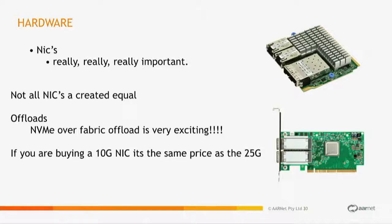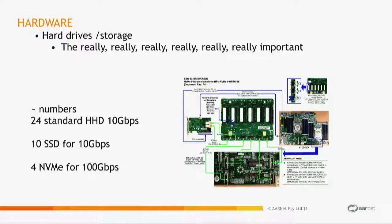NICs are super important — they're not all equal. Pretty much there are two chipsets in most of them and the implementation of those chipsets is very, very different. Make sure you're pushing them, and note that 10 gig is about the same price as 25 gig — so why not buy 25 gig NICs? For storage: to do 10 gig you need 24 standard drives just for spindle speed, but 10 SSDs or 4 NVMes will give you 100 gigabits per second — a really big difference.